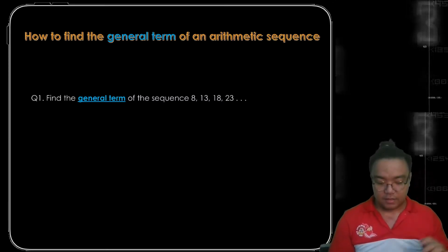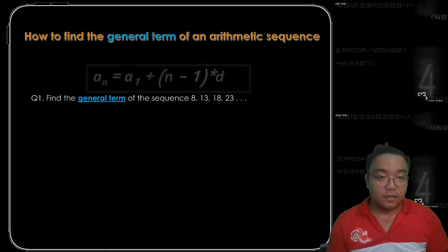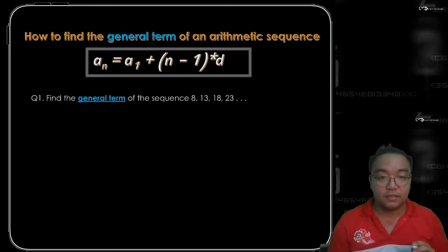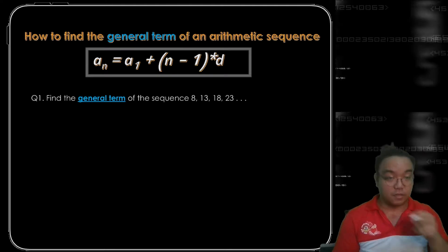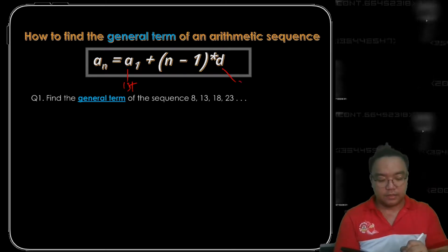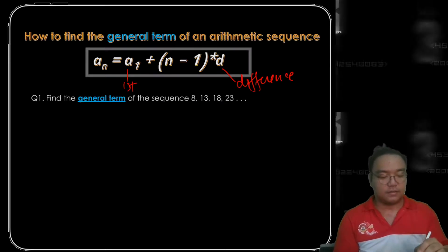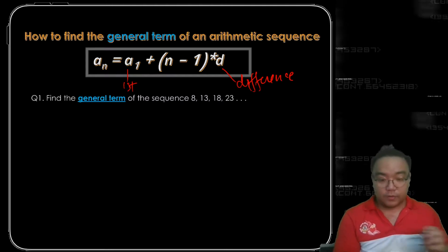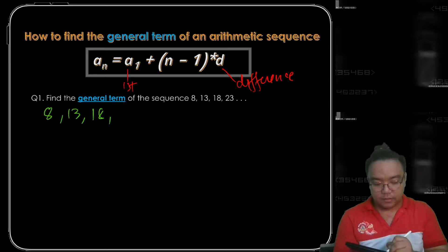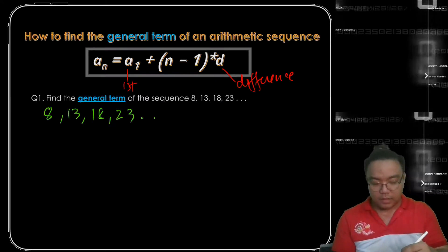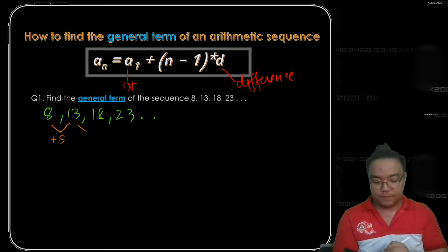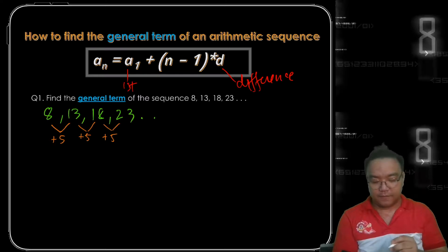...23, and so on. We know that the general rule for an arithmetic sequence is: a sub n equals a sub 1 plus (n minus 1) times the common difference d, where a sub 1 is our first term and d is our common difference. Looking at the terms 8, 13, 18, 23, each value has a difference of positive 5.